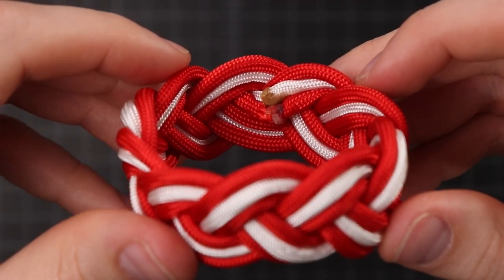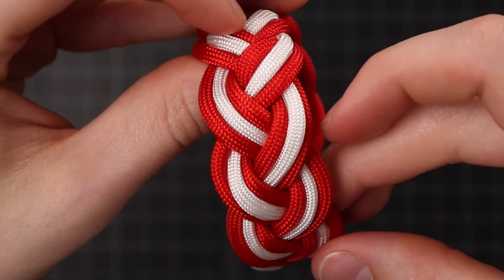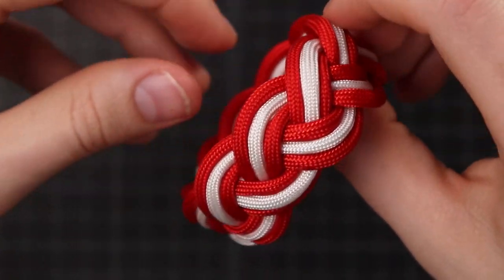There you have it, the classic nautical Turk's Head bracelet in two colors. I hope you guys enjoyed this one and are able to try it for yourselves. As always, we'll put a link to paracord down in the description if you need to buy some. Thanks for watching guys, and we'll see you next time.